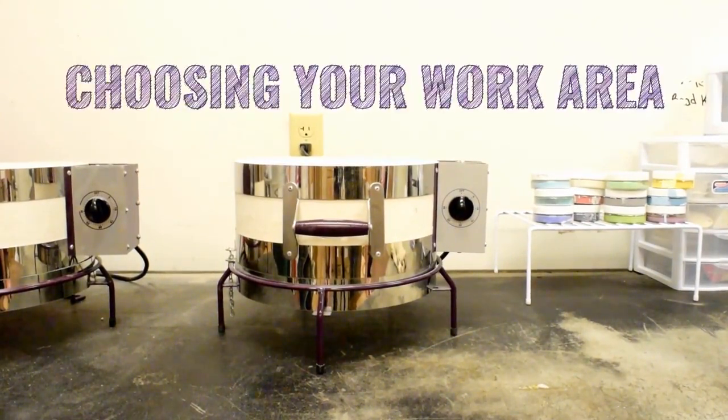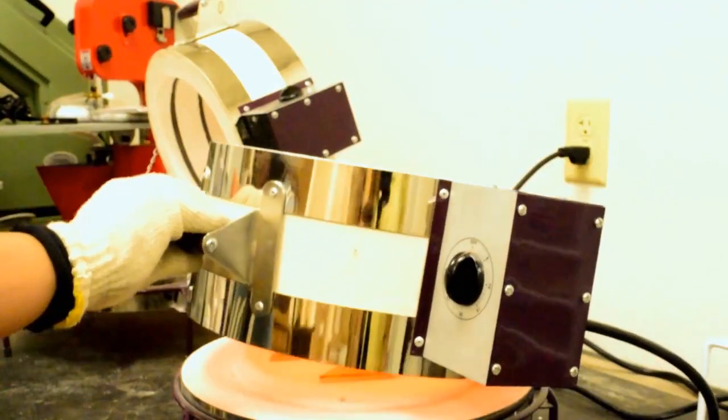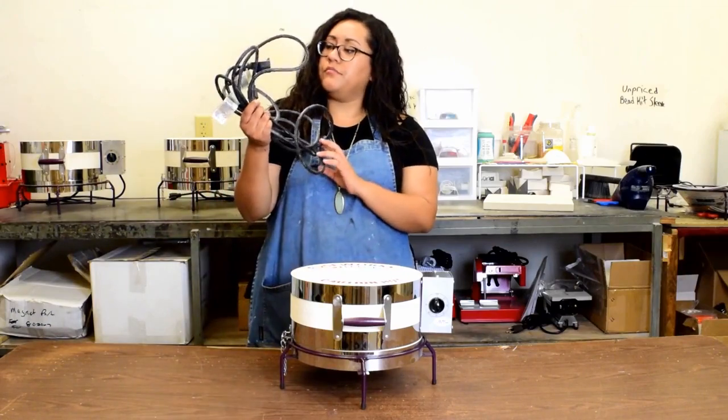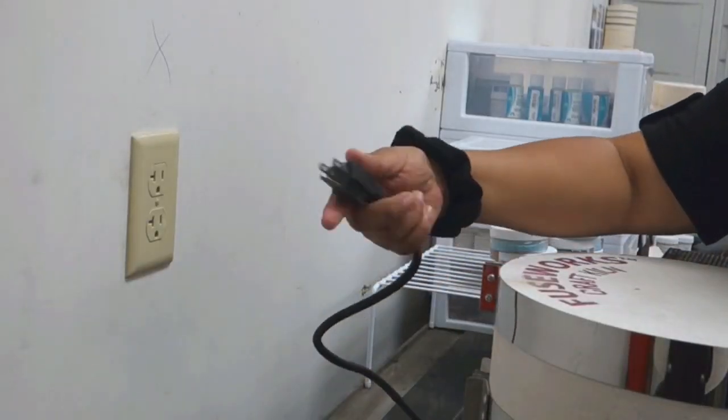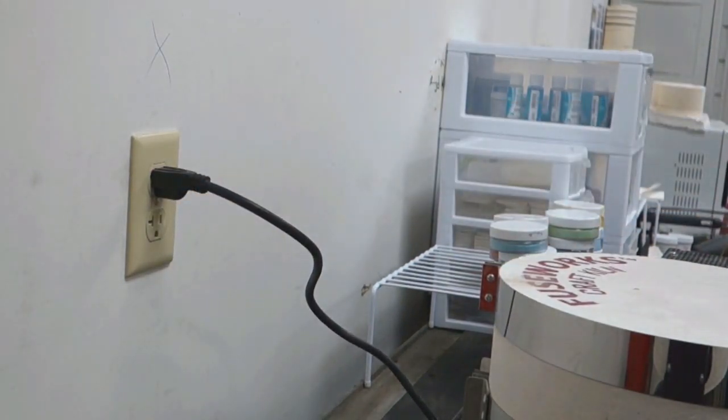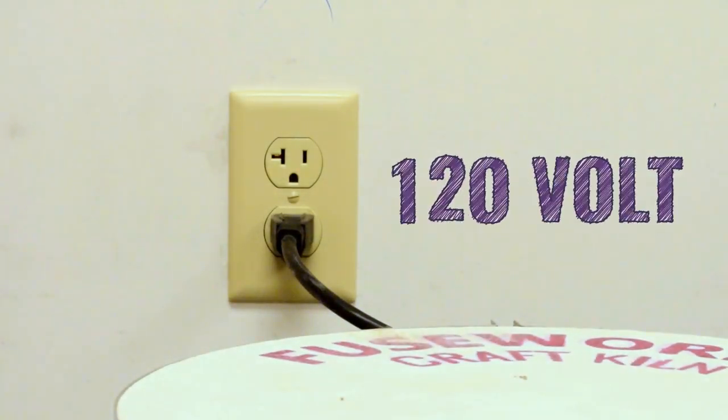Selecting the work area for your kiln is important. Your kiln, like most heat producing appliances like ovens, toasters, or irons, draws too much current to be used with most average extension cords. So we recommend you select a place for your kiln close enough to plug in directly to the outlet. Don't worry, a standard American household 120 volt outlet works just fine for the kiln. There's no need to have an electrician rewire a new outlet for you.